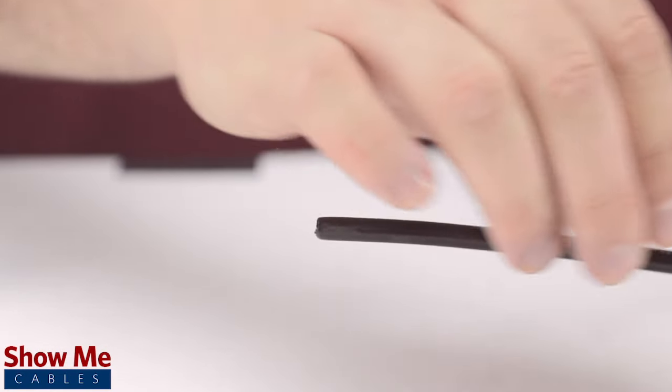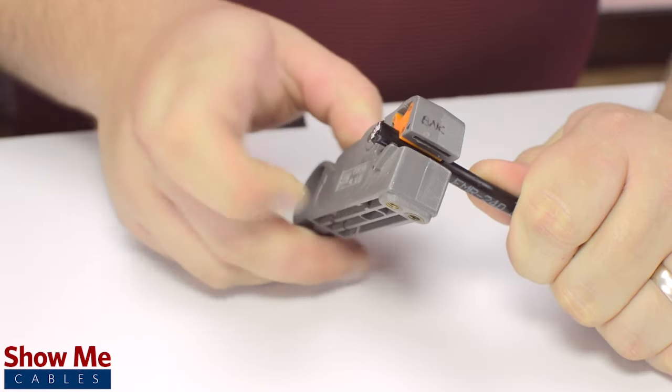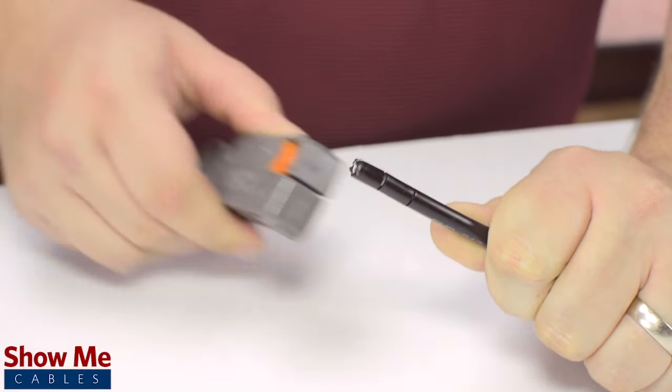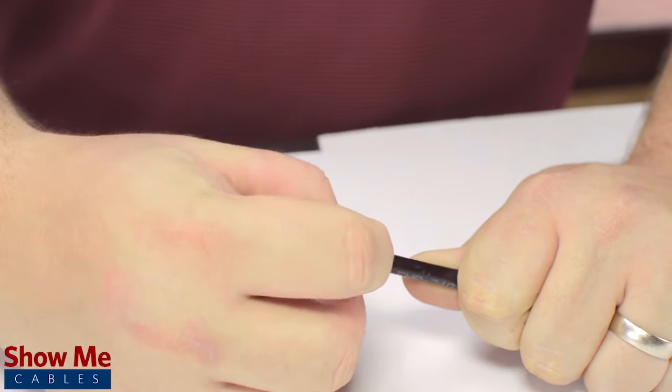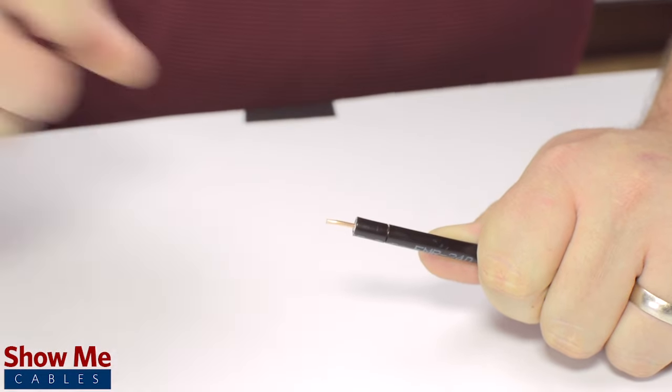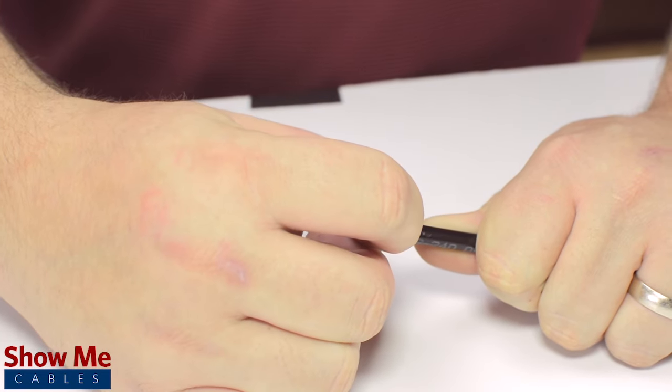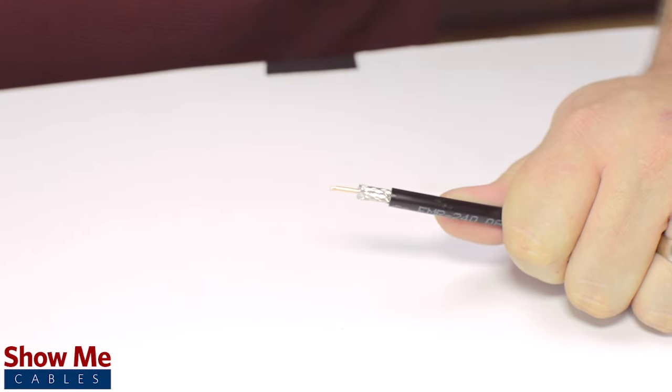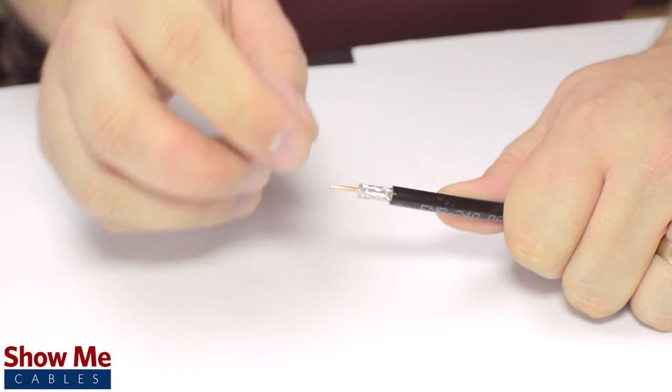First, slide the ferrule onto the outside jacket, then strip back the jacket and dielectric using the strip tool. The advantage of using a coax stripper is that it will strip back the jacket and dielectric at the same time, but in general the jacket should be stripped about half an inch and the dielectric down to about a quarter of an inch.